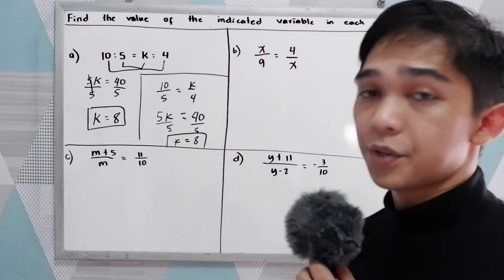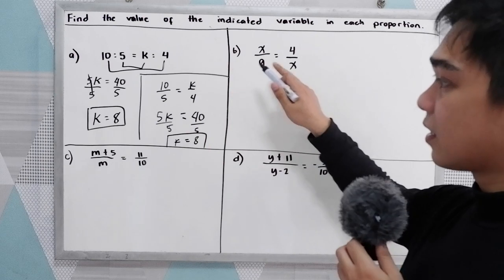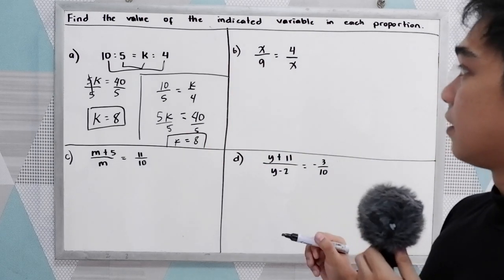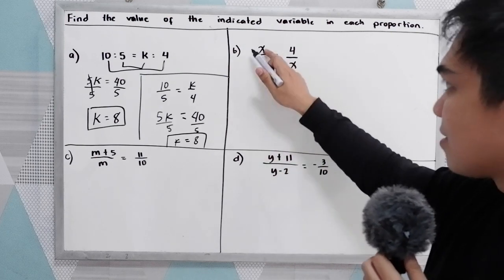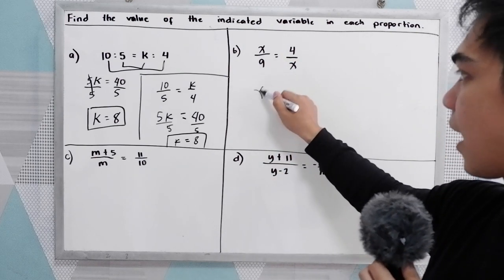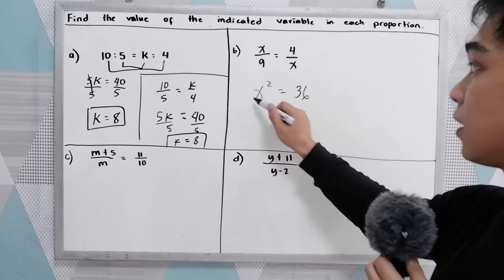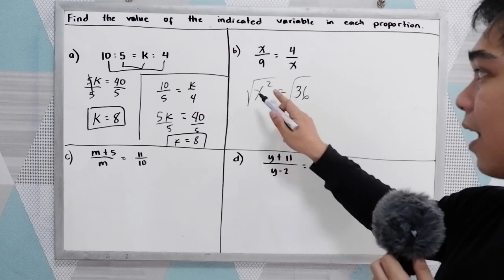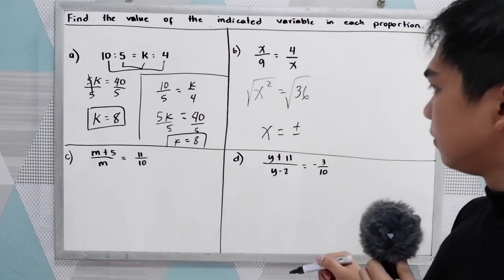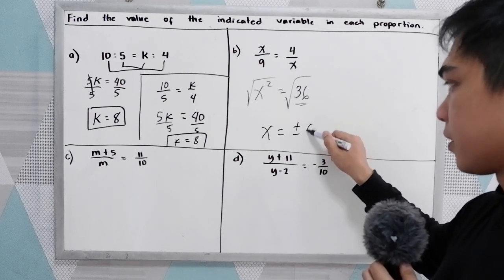Let us apply the cross multiplication technique for letters B, C, and D since they are in fraction form. For letter B: x times x gives x squared, which is equal to 9 times 4, that is 36. Taking the square root, x equals positive or negative 6, since 36 is a perfect square.